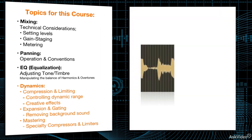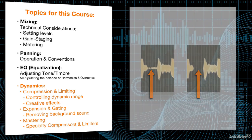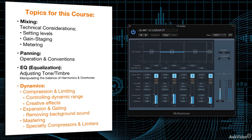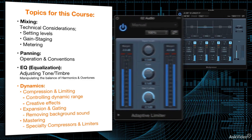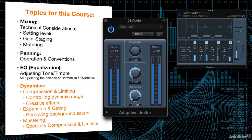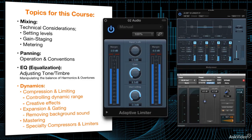Expansion and gating can remove unwanted background sound in a track, like headphone leakage. And specialty compressors and limiters are routinely applied nowadays in mastering—for better or worse. That's how they achieve those really loud levels of modern mixes.